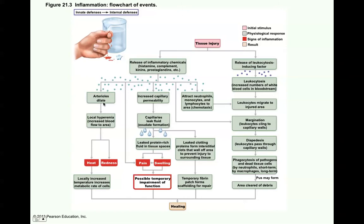With this inflammation, the arterioles dilate and you get increased capillary permeability. Chemicals attract neutrophils, monocytes, and lymphocytes — all leukocytes or white blood cells. This is called chemotaxis, where they're attracted by these chemicals to go to that area. The arterioles dilate, you get local hyperemia — that means increased blood flow — leading to heat, warmth, and redness. The locally increased temperature actually serves to help healing because it increases the metabolic rate of those cells.